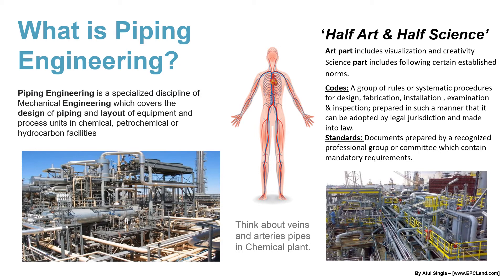The main agenda is to optimize the pipe route and equipment layout. A person with good visualization and creativity can do wonders here. The science part includes certain established norms — because hundreds of billions of dollars are involved in a single project, things cannot go randomly. There are few codes and standards. Codes are a group of rules or systematic procedures for design, fabrication, installation, examination, and inspection, and they can be adopted by legal jurisdiction and made into law.